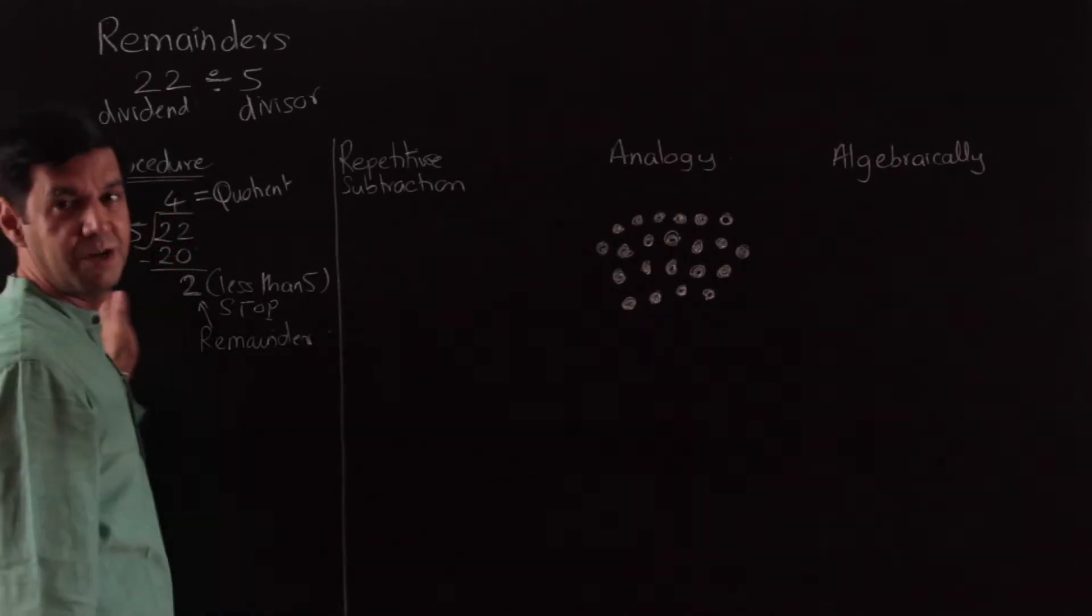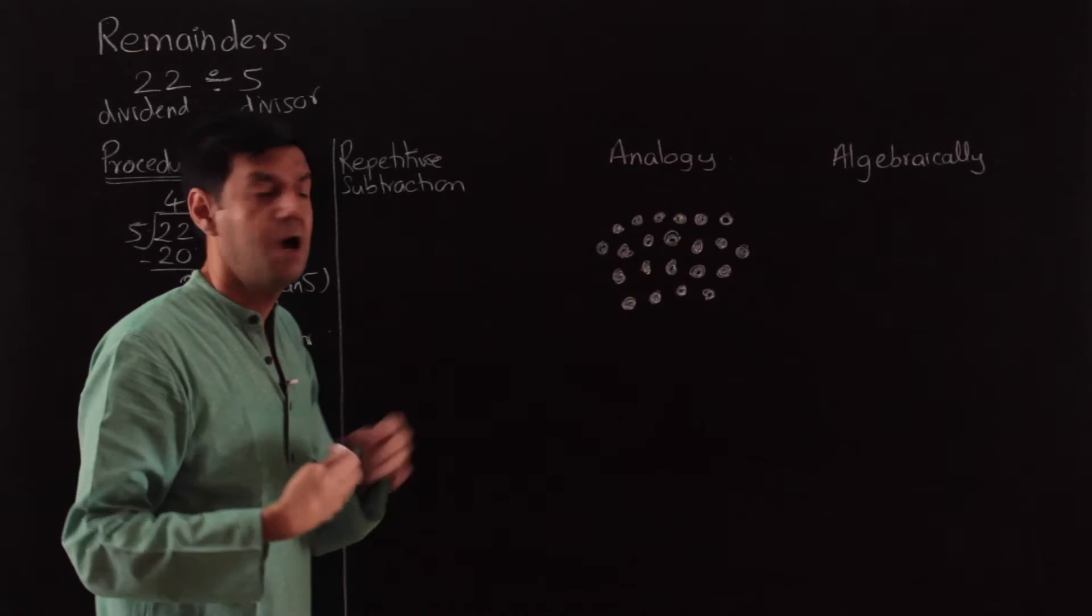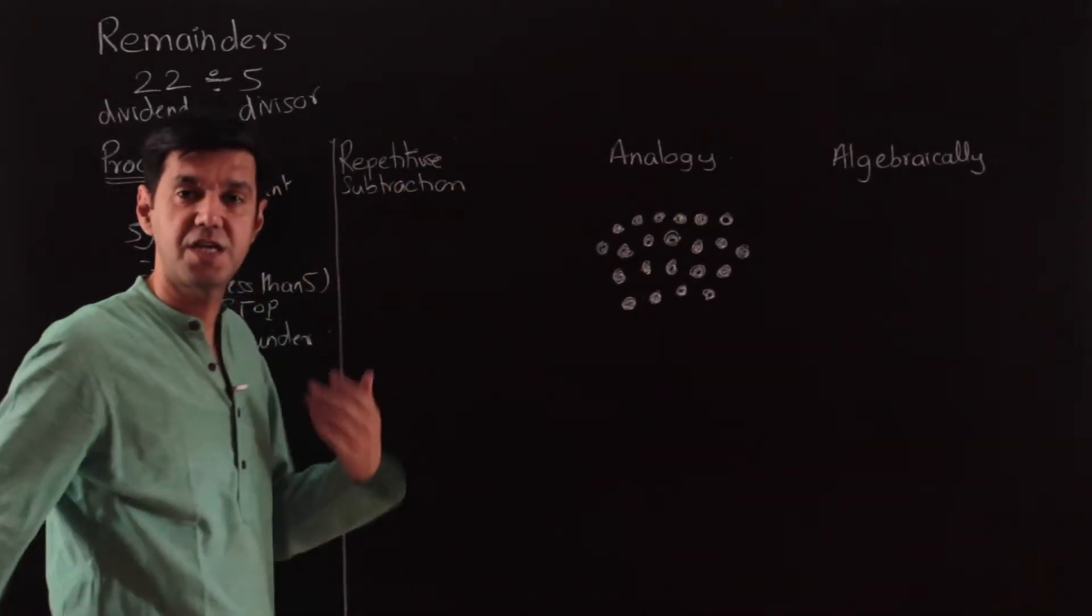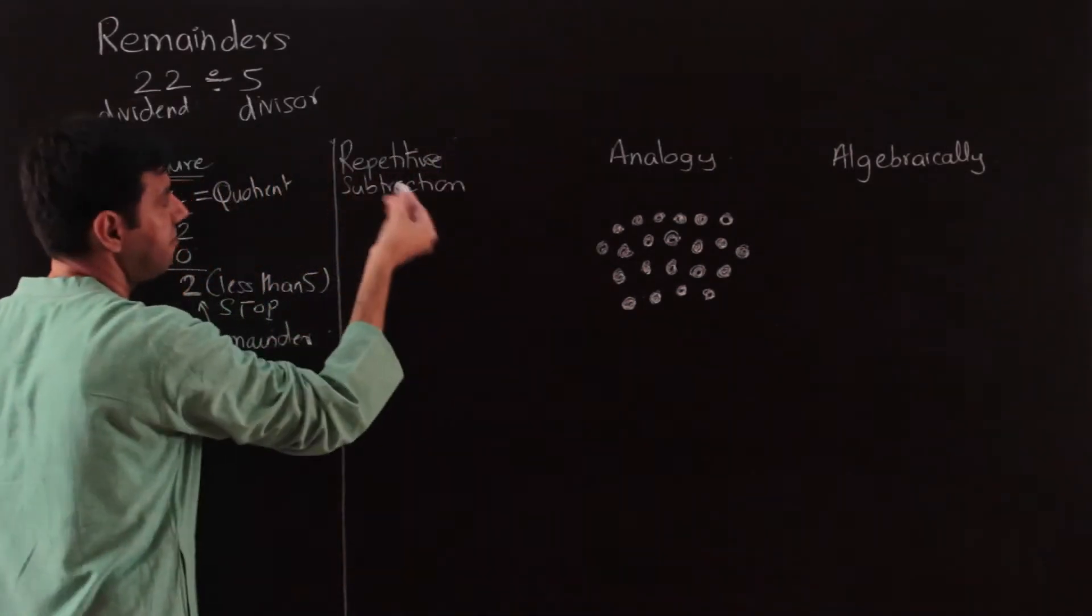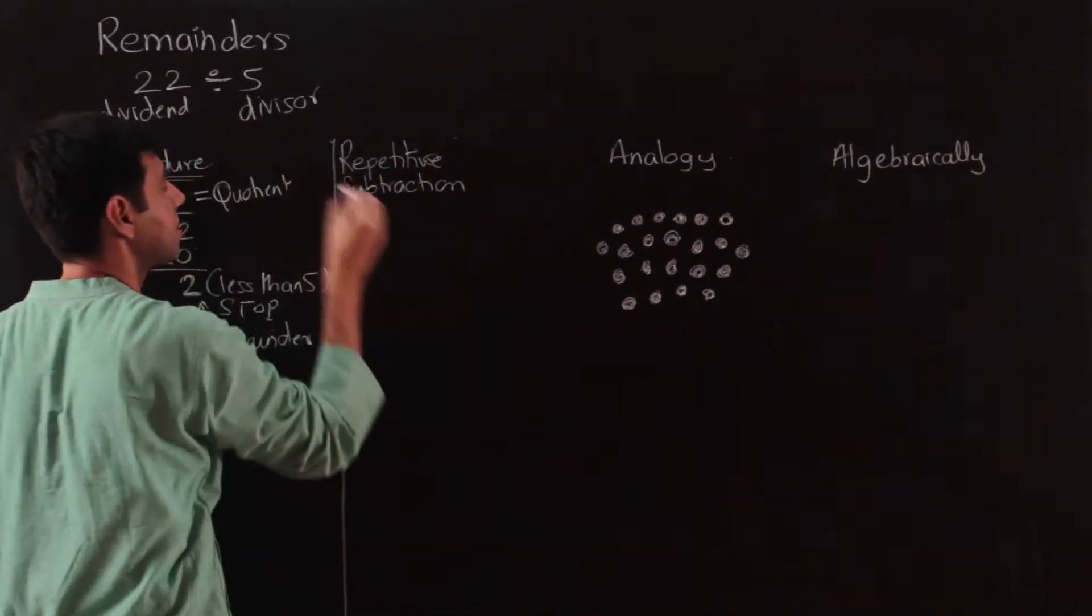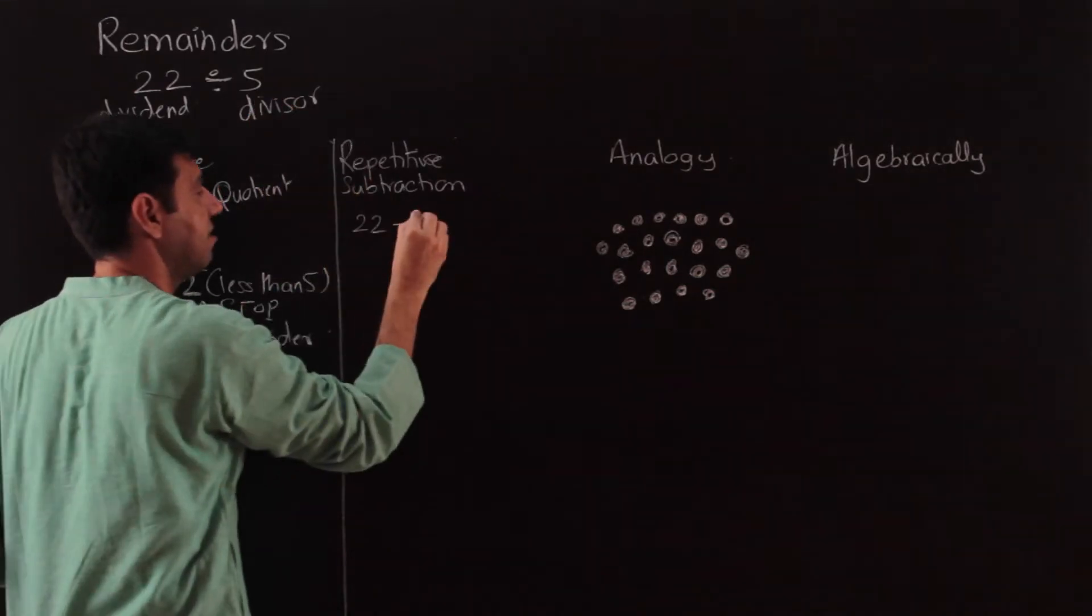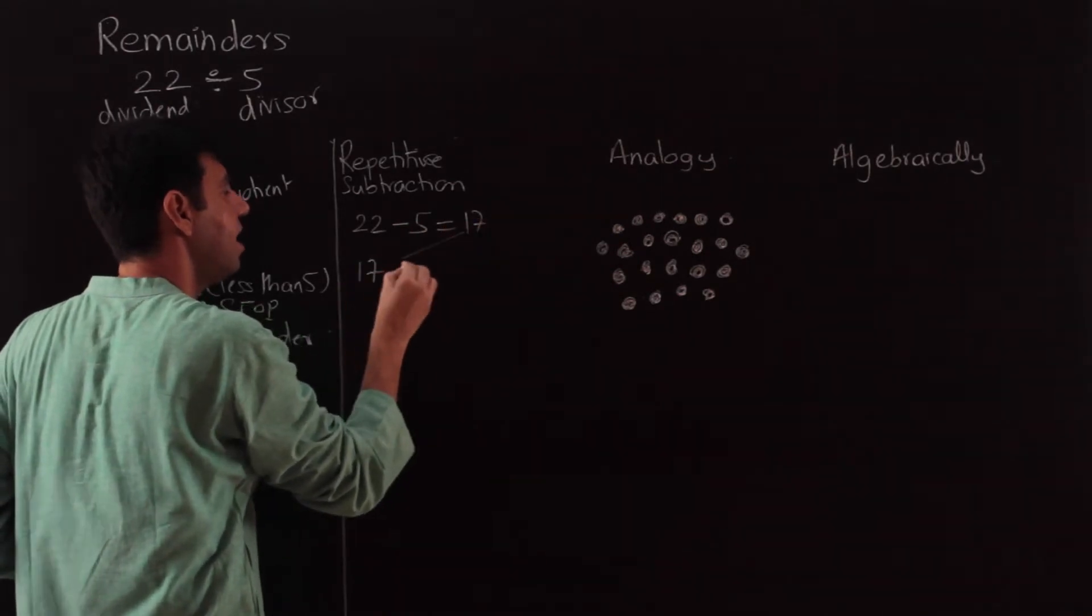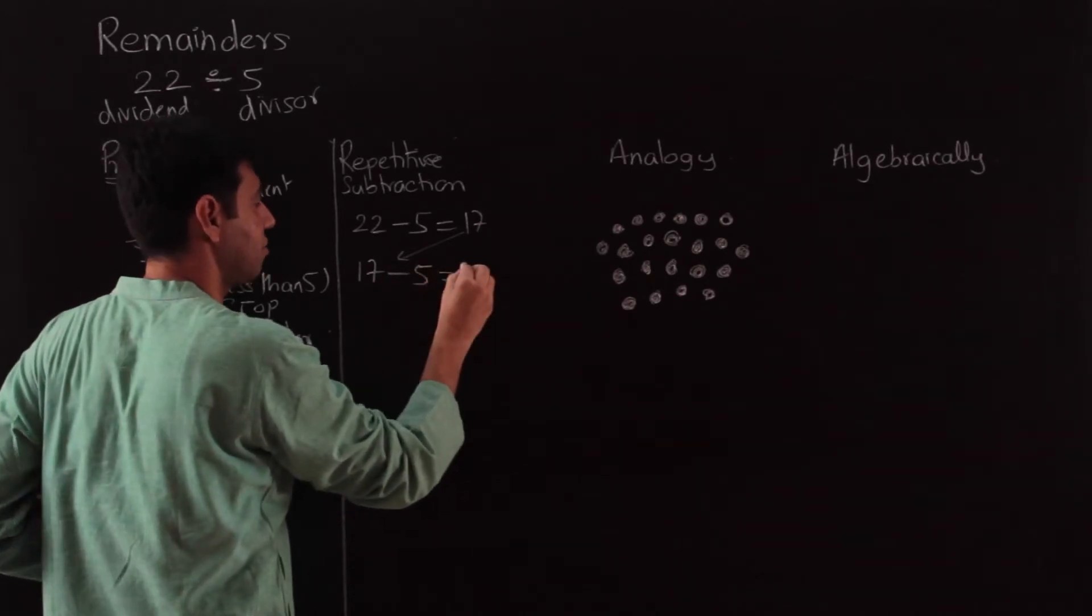If we go back, what is division? Division is basically repetitive subtraction. If you remember, multiplication is repetitive addition; division is repetitive subtraction. You start with 22, subtract the divisor 5, I'm left with 17. Take that 17, subtract 5 again. Keep subtracting 5, I'll be left with 12.